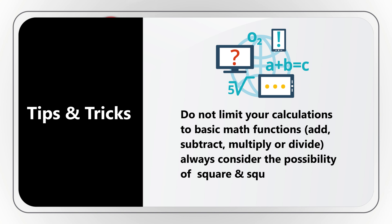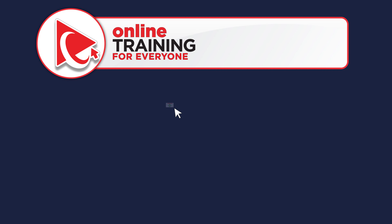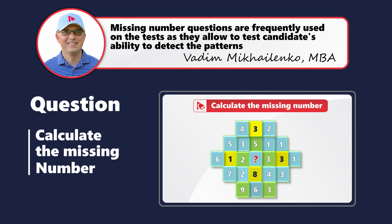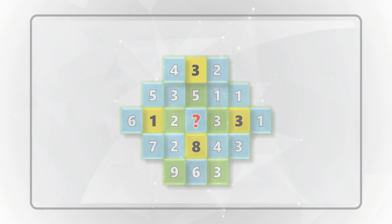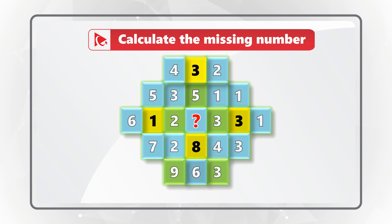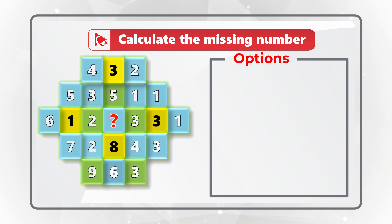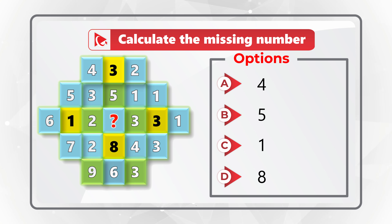Some tips and tricks: the triangles are different colors only to confuse you — colors contribute nothing to the pattern, so ignore them. Also, don't limit yourself to just addition, subtraction, multiplication, and division. Always consider the possibility of squaring numbers or taking square roots. It's good to memorize squares up to 20 so you can work them out in your head without a calculator.